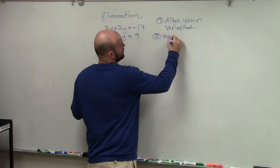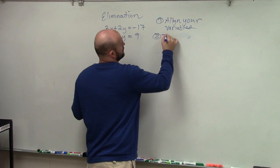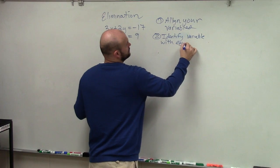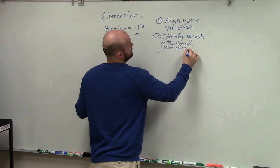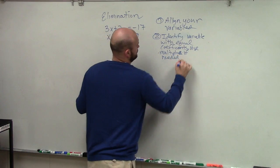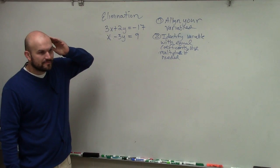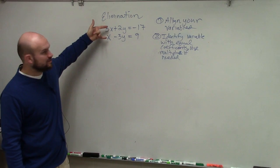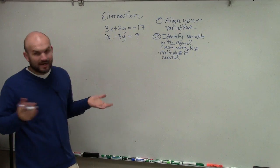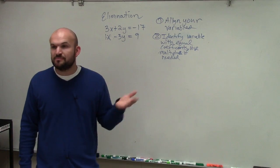Step number two: use or identify a variable with equal coefficients — use multipliers if needed. What I mean by that is: do either of my variables have coefficients that are exactly the same? Do the x's have the same coefficient? No, that's a 3 and that's a 1. Do the y's have the same coefficient? No. So I don't have any variables with the same coefficients, and therefore I'm going to have to apply a multiplier.